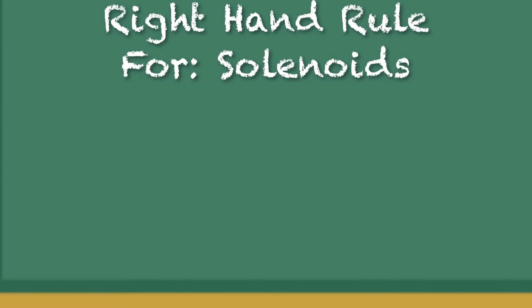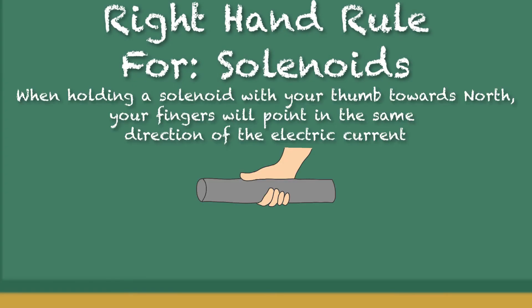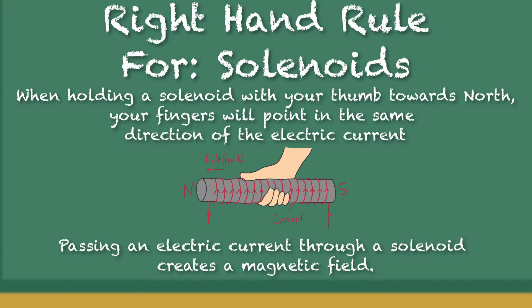Right-hand rule for solenoid: holding a solenoid with your thumb towards north, your fingers will point in the same direction of electric current. Passing an electric current through a solenoid creates a magnetic field.